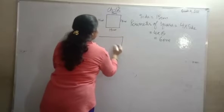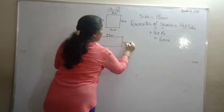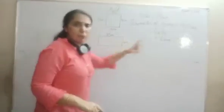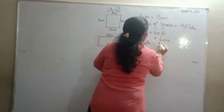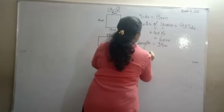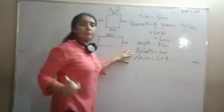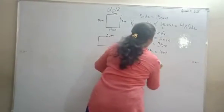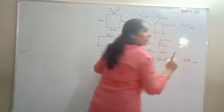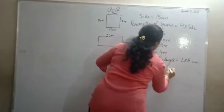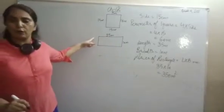Another example of perimeter of a rectangle: length is 35 meters, breadth is 10 meters. Step one: write length equals 35 meters, breadth equals 10 meters. Two dimensions are given, so the figure is a rectangle. Perimeter of rectangle equals 2 multiplied by (length plus breadth), and the area of rectangle equals length multiplied by breadth, that is 35 meters into 10 meters, which equals 350 square meters. This is the area of your rectangle.